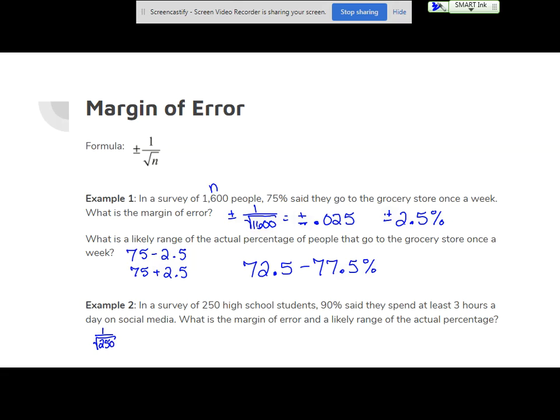So let's find the margin of error. One over the square root of our number. We get 0.063. So that is plus or minus 6.3%. So our margin of error here is larger.